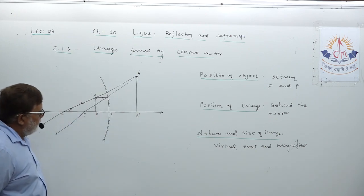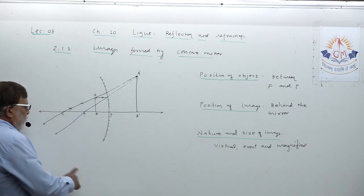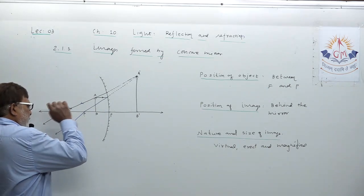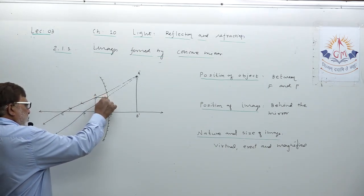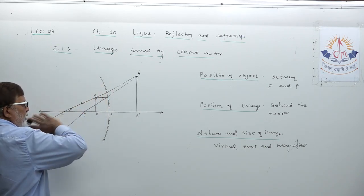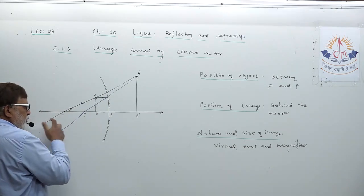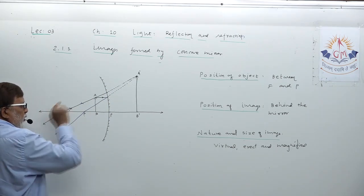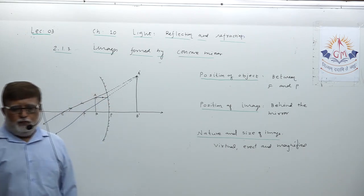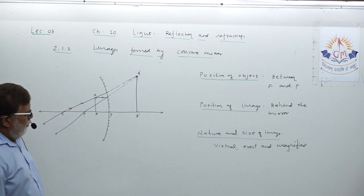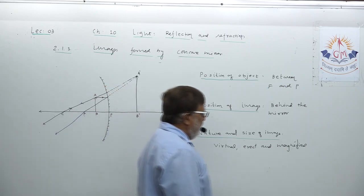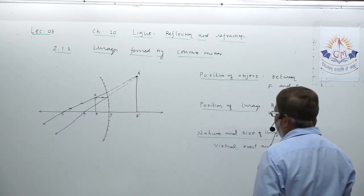Verify this in your material — some other ray may have been used in the diagram there, but this construction also gives the same result. The first ray parallel to principal axis passes through focus; the second ray through center of curvature reflects back. Both reflected rays extended behind the mirror form the image there: virtual, erect, and magnified.